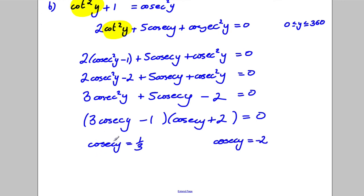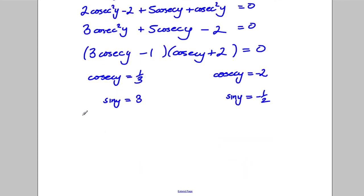Cosec means 1 over sine. So sine y would therefore be equal to the reciprocal of this, which is 3, or sine y would be the reciprocal of this, which is negative 1 half. Obviously, I'm going to ignore this one because it's got no solutions because sine has to be between 1 and negative 1. But I can find my solutions here.